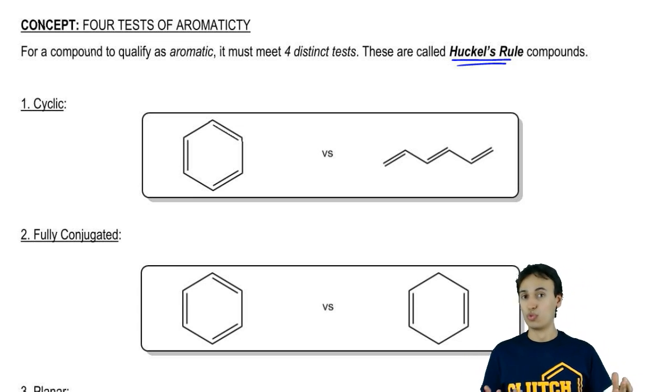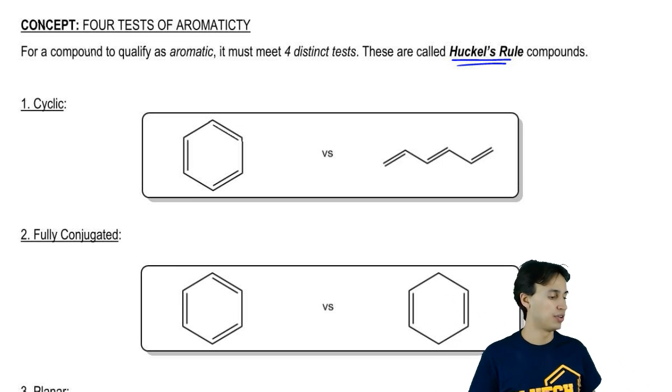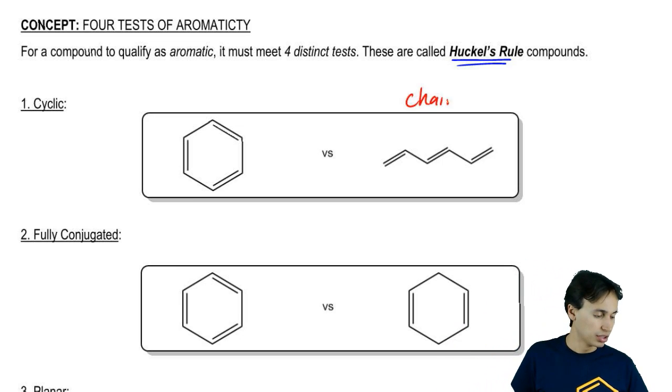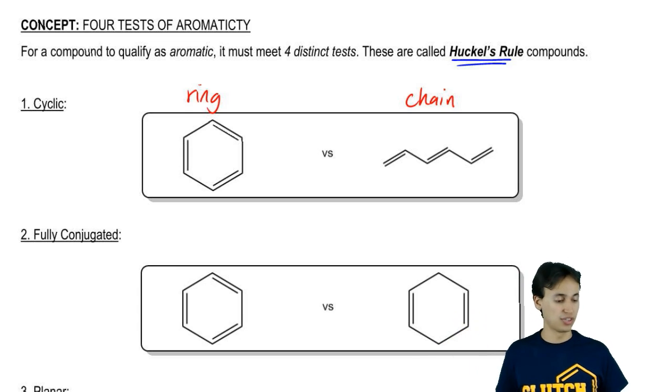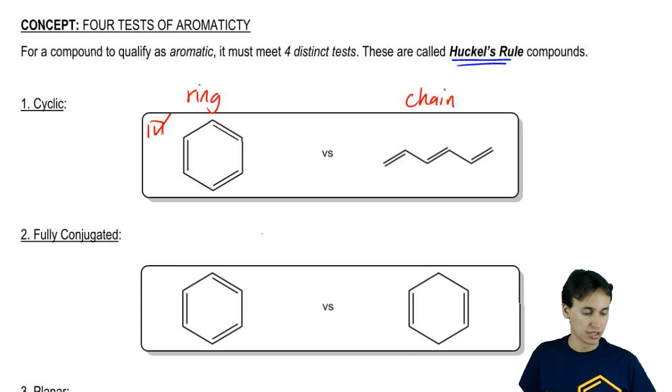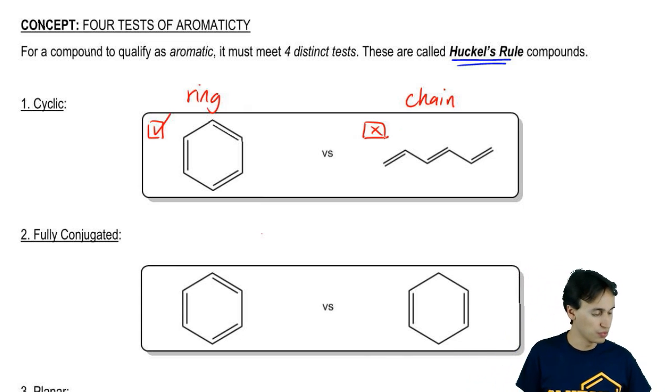So let's start off with the easiest rule to apply, which is that for a molecule to be aromatic, it has to be cyclic. Here I'm going to be comparing and contrasting an aromatic molecule to one that doesn't meet the specific rule. Here we have benzene, which you already know is an aromatic molecule on the left. On the right, notice that I have a chain. Now the fact that benzene is a ring doesn't by itself make it aromatic, but it does make it fulfill the first test. So this one passes the first test and this one fails the first test because it's not a ring. That's easy. Let's move on to the second one.